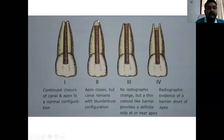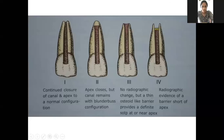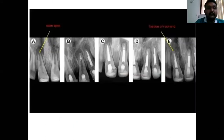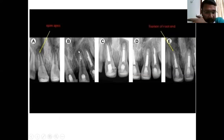The major disadvantage of the conventional multi-visit technique: if the patient does not come on time for follow-up, there are higher chances of failure. Also, a temporary seal is placed at access preparation — if the temporary seal fails or fractures, there are higher chances of reinfection. To avoid this, a single-visit apexification procedure was developed. In single-visit apexification, MTA is placed at the working length instead of calcium hydroxide, using the same access opening procedure.